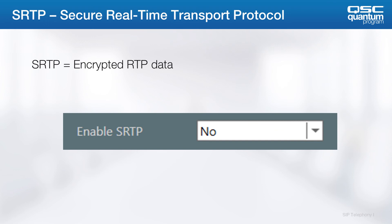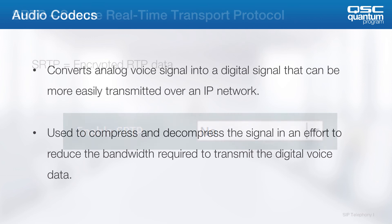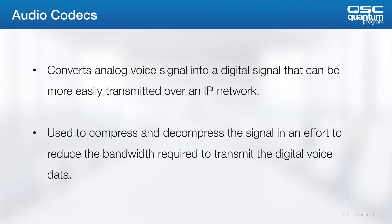Some providers require SRTP and TLS, which is used to encrypt SIP messages. Although this is not always the case, some providers will allow one or both.